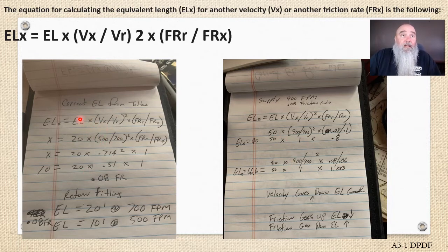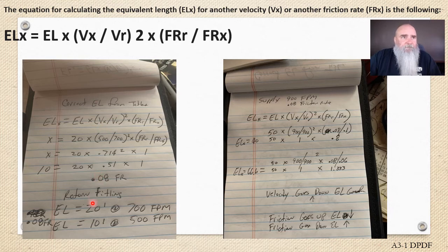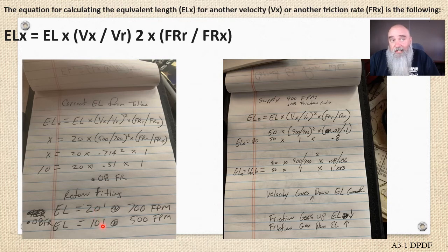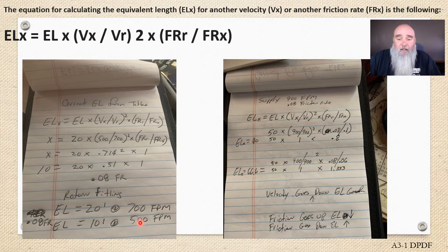This is me doing the math, and this example right here I had the effective length of a fitting at 700 feet per minute dropped to—this fitting, 20, was cut in half just by dropping my velocity by 500 feet per minute.